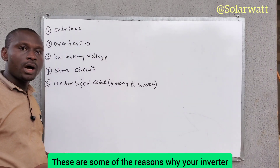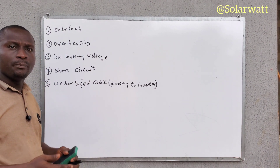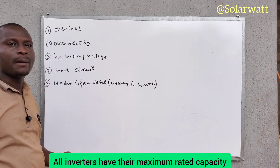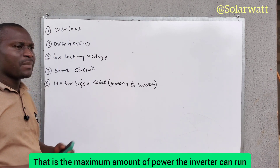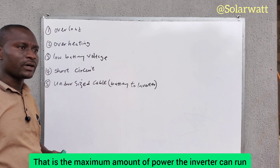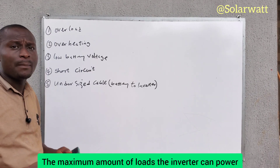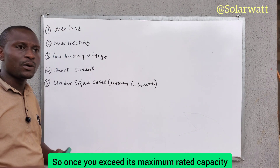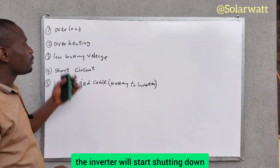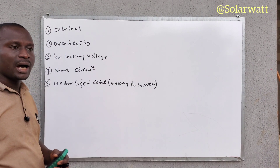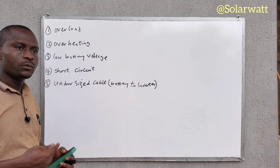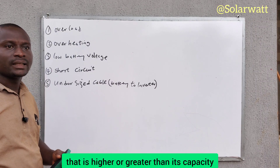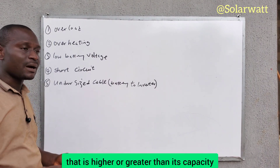These are some of the reasons why your inverter may be shutting down. Reason number one is overload. All inverters have their maximum rated capacity — that is the maximum amount of power the inverter can run, the maximum amount of load the inverter can power. Once you exceed its maximum rated capacity, the inverter will start shutting down because you are overstressing it, forcing it to work more than it should.